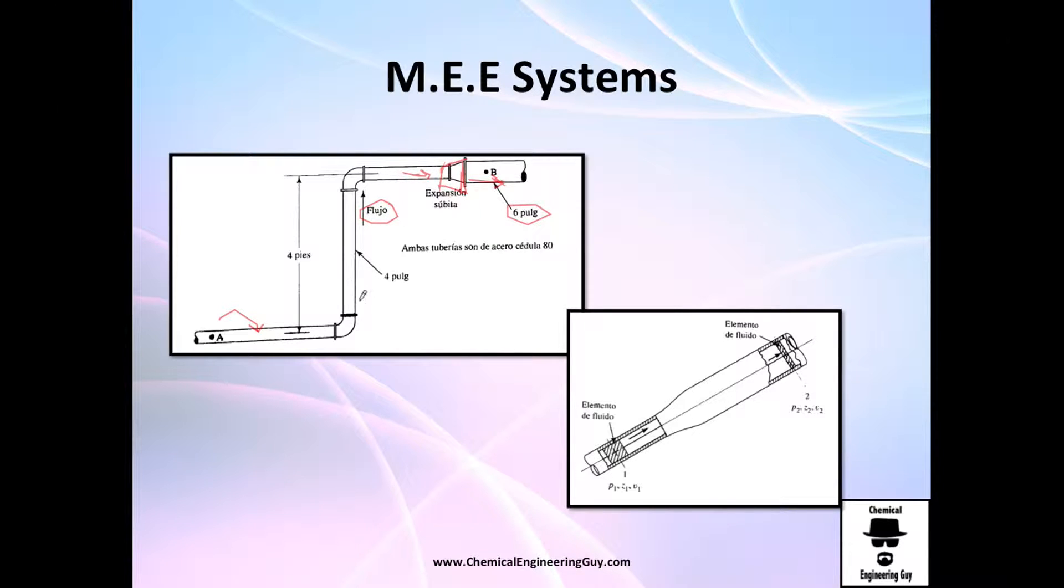For example this is 6 inches and this one is 4 inches, and you choose point A here and you choose point B here, and then you do your balance. Now another system is commonly this tube which is just expanding. You have one diameter and then goes to the second diameter. Normally you would choose this point as A and you would choose this point as B.